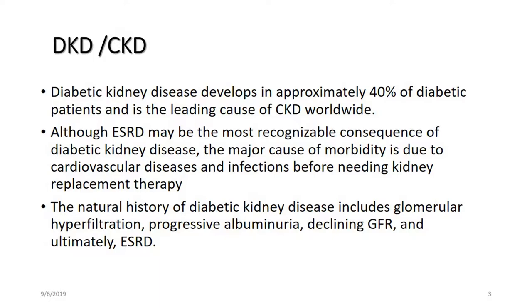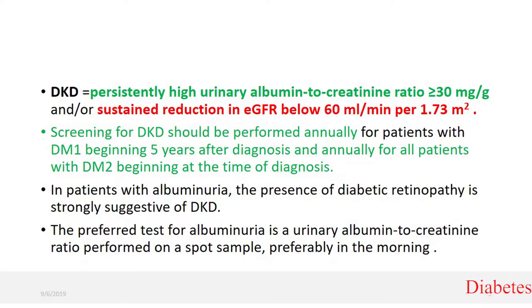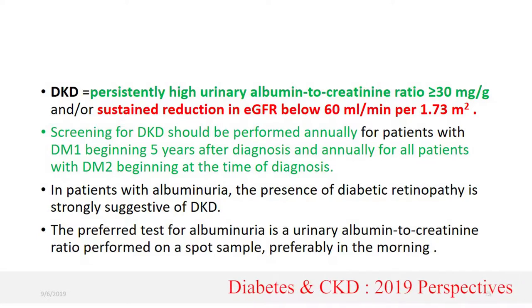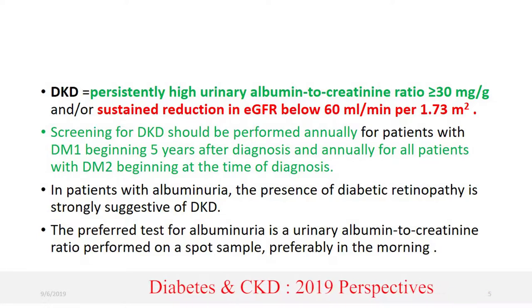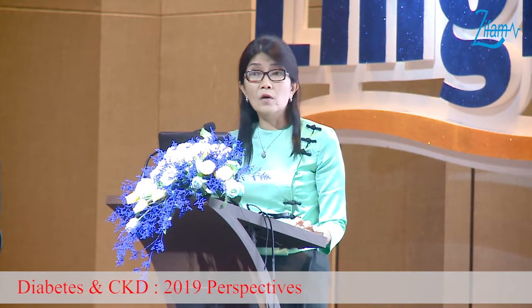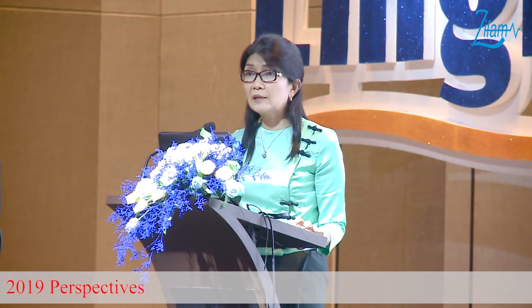For CKD, we can define it as abnormal kidney structure and function for three months with implication for health. For diabetic kidney disease, we define it as a persistently high urinary albumin-to-creatinine ratio of more than 30 mg per gram, or a sustained reduction of eGFR below 60 ml per minute per 1.73 m². Screening for diabetic kidney disease should be performed annually for all patients with type 1 diabetes starting from 5 years after diagnosis, and for type 2 diabetes, starting from the time of diagnosis.